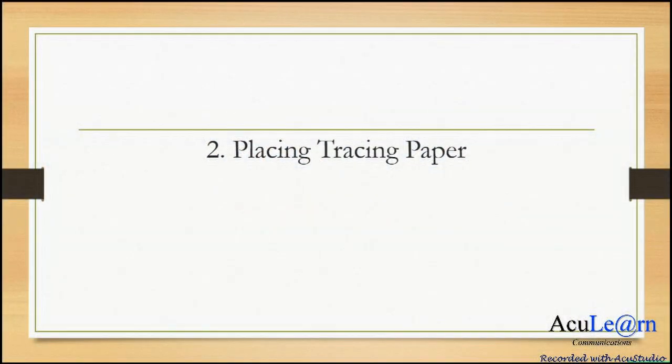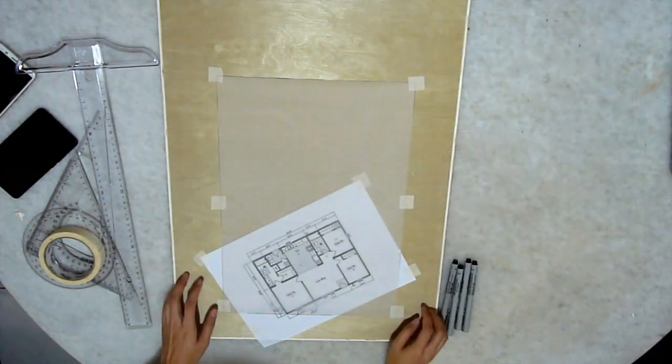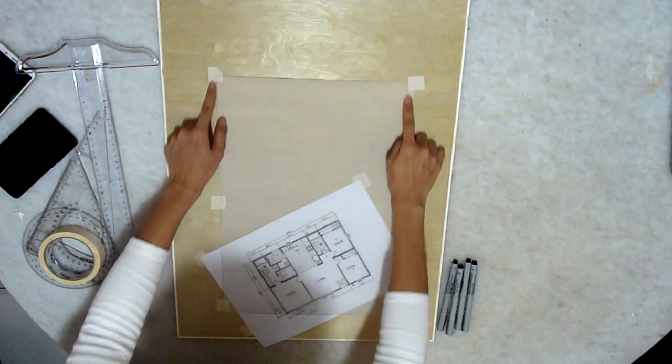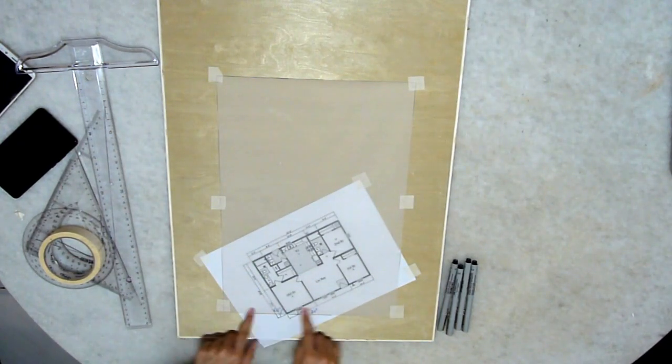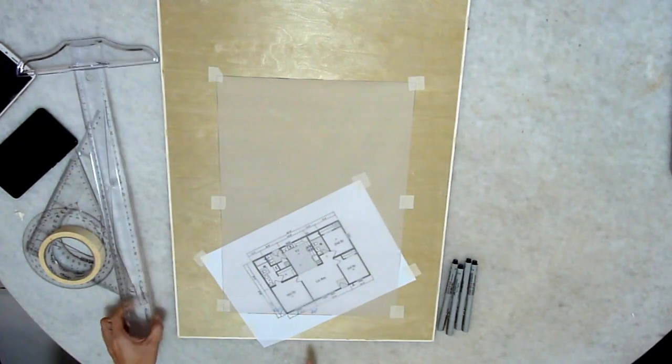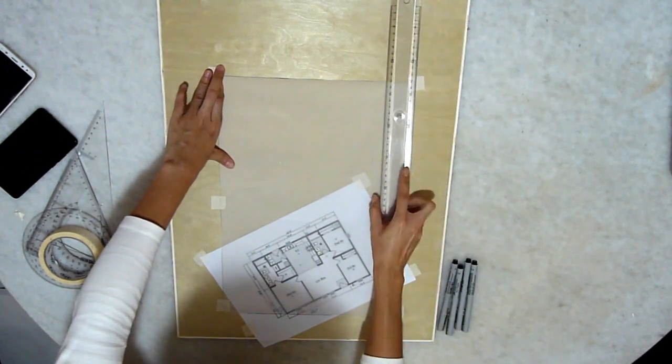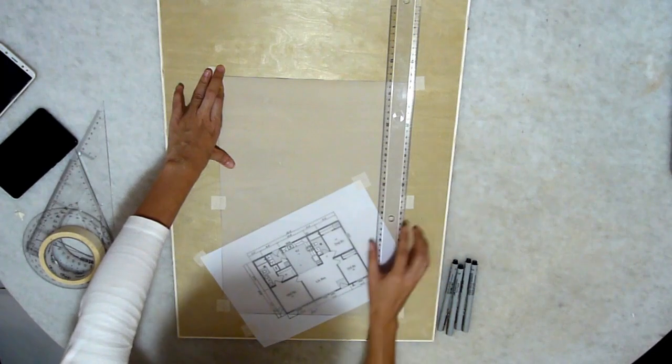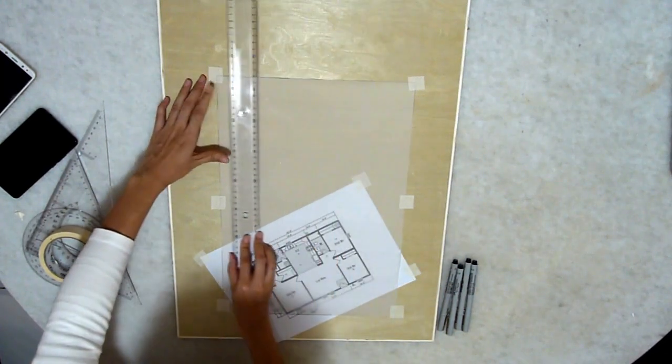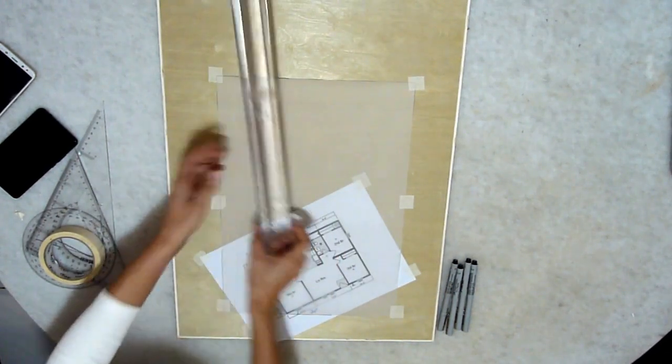Secondly, you would have to place the tracing paper on which you are going to draw on. And this is how you will do it. The next thing you want to do is to set up your A3 tracing paper like so. Firstly, it is important to check that your A3 paper is parallel to the board. And it's straight, just for good measure.